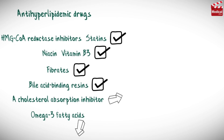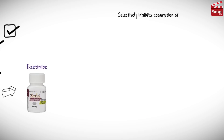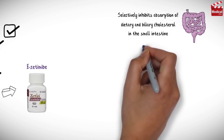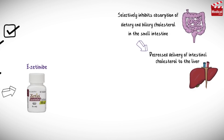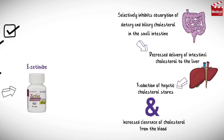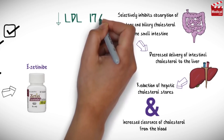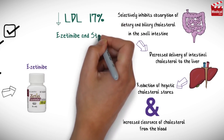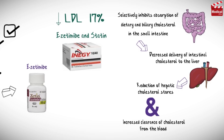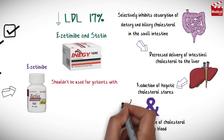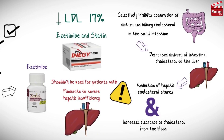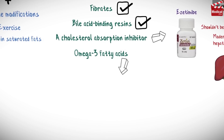The cholesterol absorption inhibitor is called ezetimibe. It selectively inhibits absorption of dietary and biliary cholesterol in the small intestine, leading to decreased delivery of intestinal cholesterol to the liver. This leads to a reduction of hepatic cholesterol stores and increased clearance of cholesterol from the blood. Ezetimibe lowers LDL by about 17 percent. A formulation combining ezetimibe with statin therapy is often used to lower LDL more effectively. It should not be used in patients with moderate to severe hepatic insufficiency.